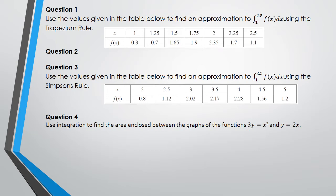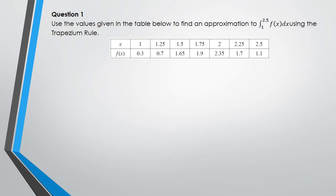All right guys, so in this question we've been asked to use the trapezium rule to find the integral of f(x) between 1 and 2.5. The first thing I'm going to do is label all my n's, so you've got 0, 1, 2, 3, 4, 5, and 6.